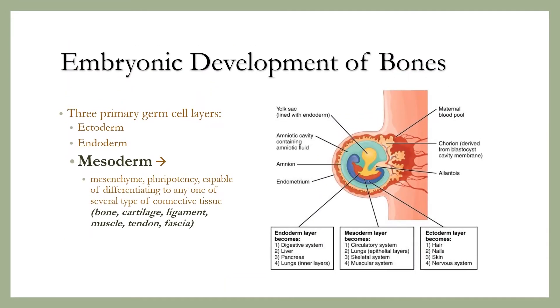There are three primary germ cell layers. These include ectoderm, endoderm, and mesoderm.